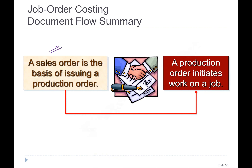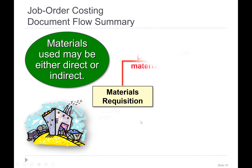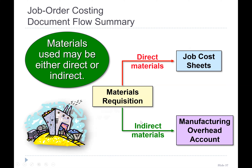When a sale order comes, it means you confirm the sale. On the basis of that sale order, production starts. When production initiates, it means you create a job. When you create a job, there are three things on it: direct material, direct labor, and manufacturing overhead.